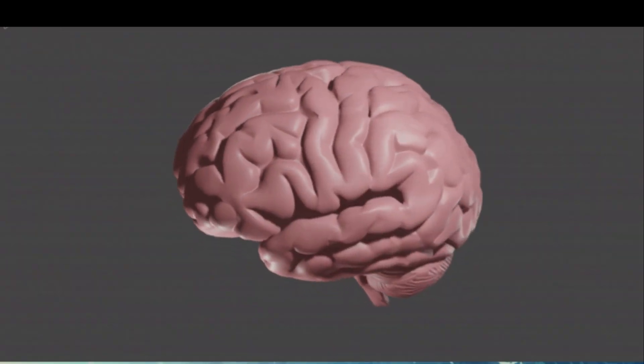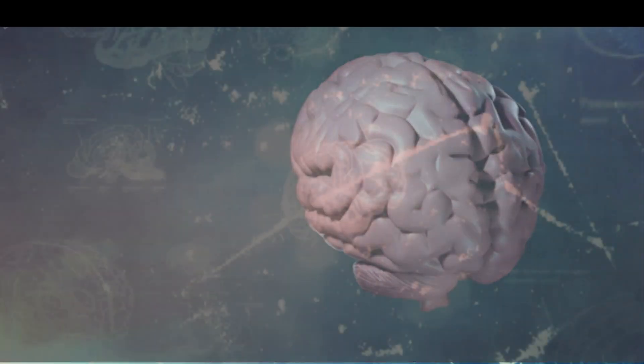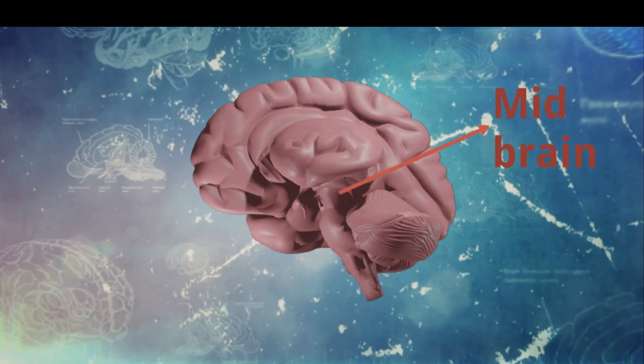The midbrain is a small part of the brain which is present below the cerebrum. It receives information from sense organs which is then passed on to the appropriate part of the forebrain.